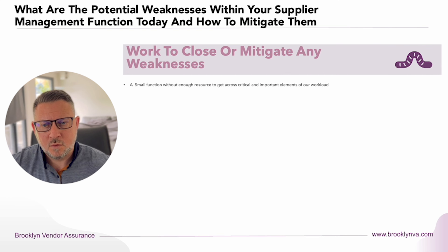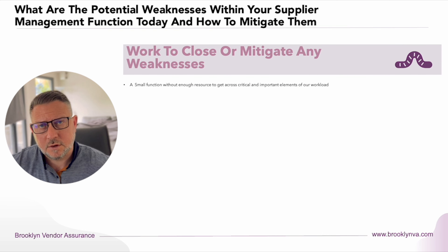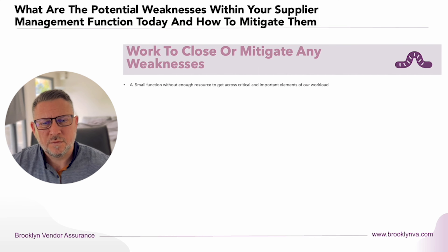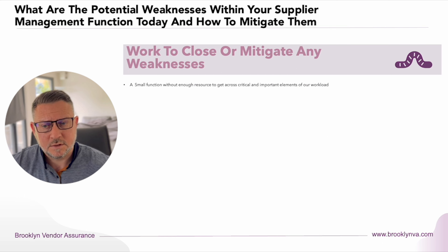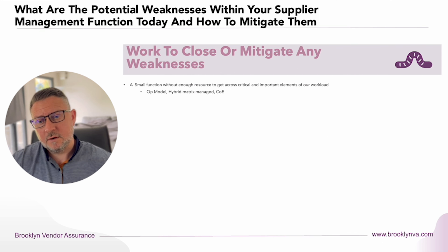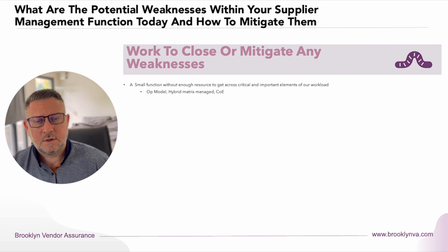One of the weaknesses we more commonly come across is that, comparative to the organization size or the number of suppliers within that organization, it tends to be a small function. There tends to be not a lot of people and never enough resources to get across all the critical and important elements of the workload, let alone the rest of the suppliers in the supplier tail and the vendor tail. So what do we recommend? We ask them to look at the operating model.